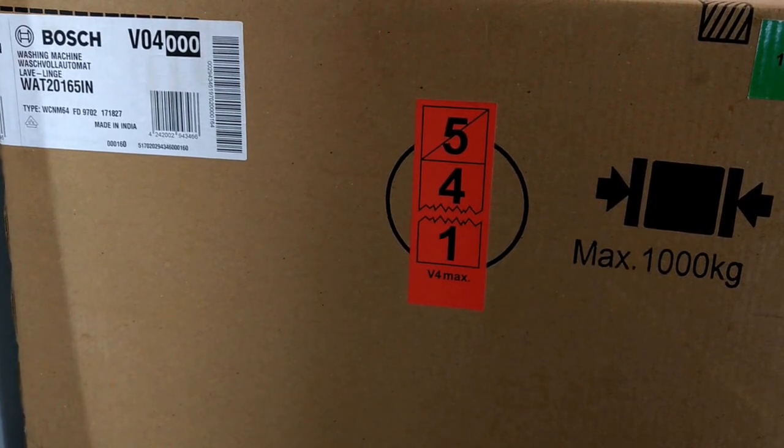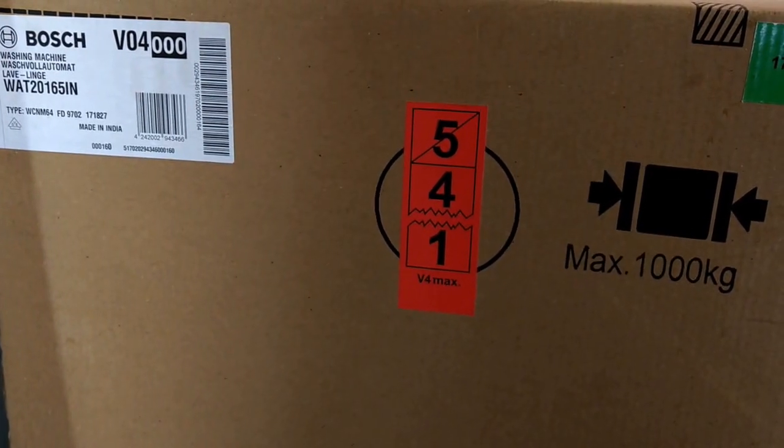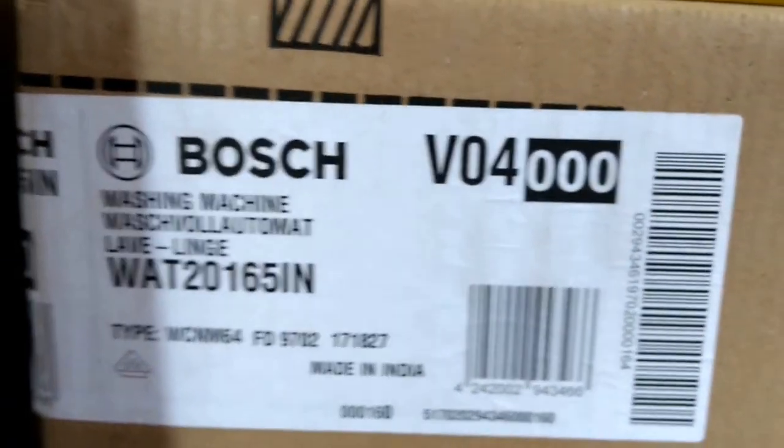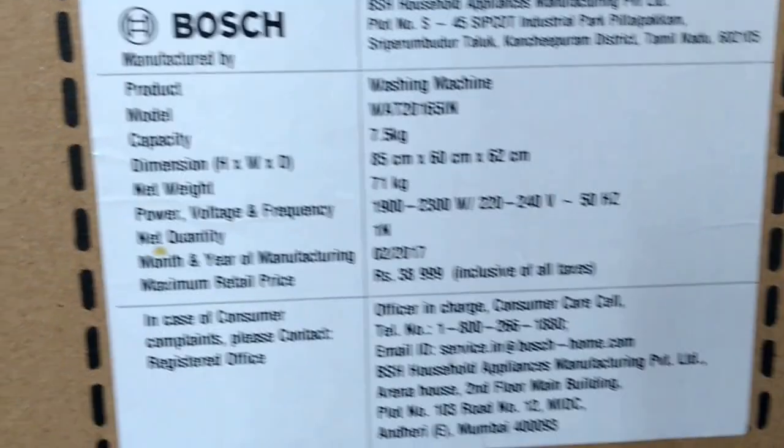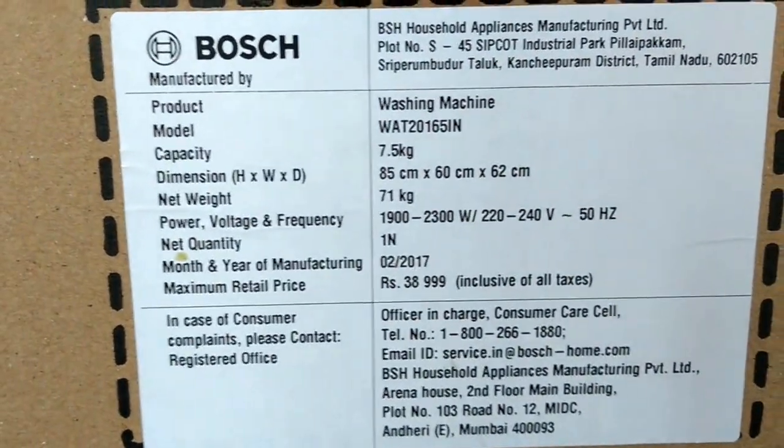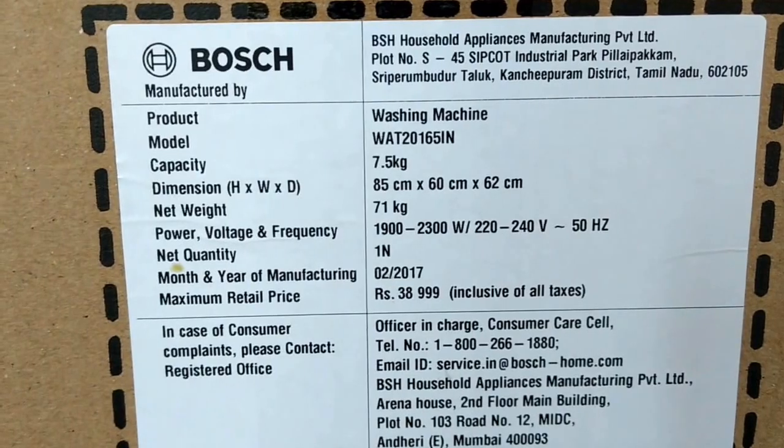My new washing machine which is Bosch VAT 20165IN, so let's look at the label. We go around the box to show the manufacturing details. You can look at the dimension is 85 centimeter into 60 centimeter into 62 centimeter.